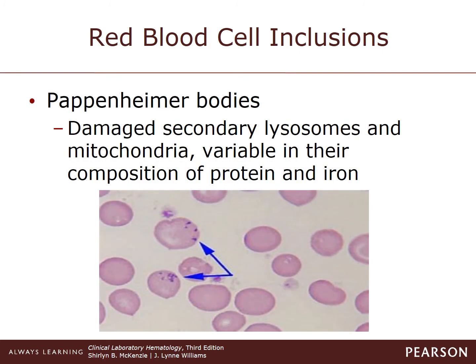Pappenheimer bodies are clusters of granules containing iron that are usually found at the periphery of the cell. They are visible with a Prussian blue stain and a Wright stain. They are seen in thalassemia and sideroblastic anemias and other severe types of anemia.